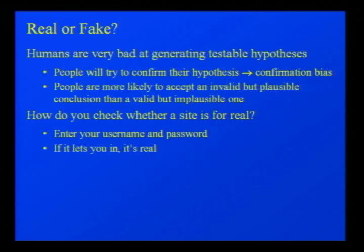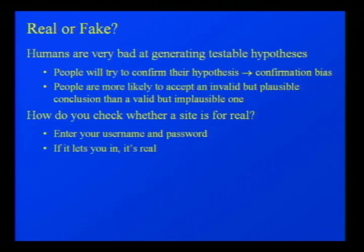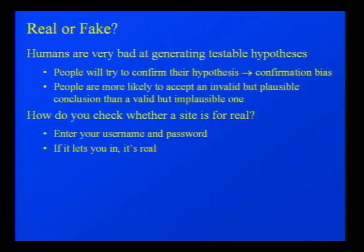Another problem with human minds is they're very bad at generating testable hypotheses. They will try to confirm something rather than to prove it invalid — humans exhibit confirmation bias. Instead of saying 'I'm going to try these things to check whether it's a fake site,' they say 'I'm going to try these things to confirm it's the real site.' A consequence is that people are more likely to accept an invalid but plausible conclusion than a valid but implausible one. From real user testing: how do you check if a site is real? You type in your username and password, and if it accepts them, obviously it knows your password so it must be the real thing. This is absolutely appalling, but this is how users actually try to verify potential phishing sites.